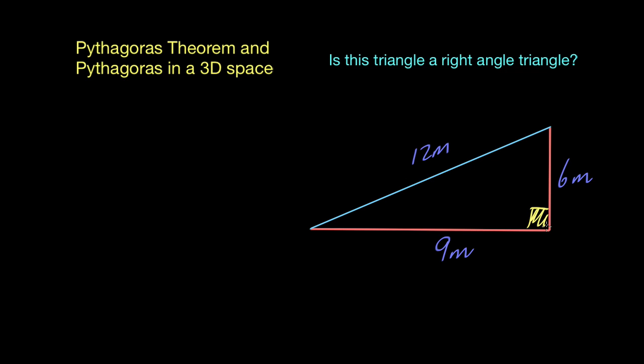So there would be a right angle normally, but in this example we're not going to put that there because we need to figure out will 9 squared plus 6 squared give you 12 squared? So we'll go through the process that we normally use here. We're going to say a squared plus b squared equals c squared.